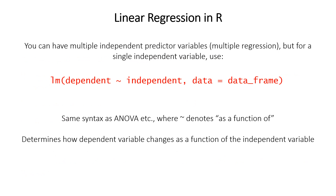In R, the function for linear regression is called lm, which stands for linear model. You can use multiple independent variables, which we'll cover in a later video, but for now we're doing simple linear regression. The syntax is similar to ANOVA: you use lm with the dependent variable as a function of the independent variable using the tilde symbol. Remember that the dependent variable goes on the y-axis and the independent variable on the x-axis.